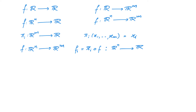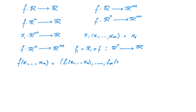We can express f of (x1, x2, x3, ..., xn) in terms of these component functions. More precisely, f of (x1, x2, ..., xn) is equal to (f1(x1, x2, ..., xn), f2(x1, x2, ..., xn), ..., fm(x1, x2, ..., xn)). And this is the reason why they are called component functions.